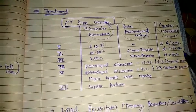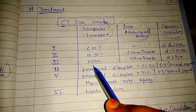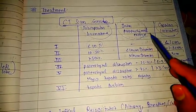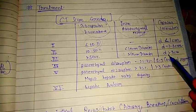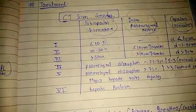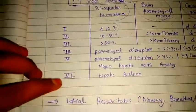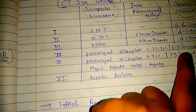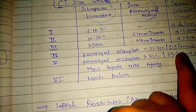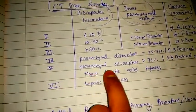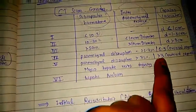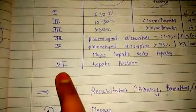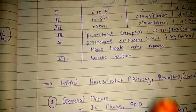Grade 3 — subcapsular hematoma greater than 10 cm diameter, intraparenchymal expansion, and laceration depth greater than 3 cm. Grade 4 — parenchymal disruption 25–75%, with 1 to 3 Couinaud segments involved. Grade 5 — parenchymal disruption greater than 75%, more than 3 Couinaud segments involved, and major hepatic veins injured. Grade 6 — hepatic avulsion.